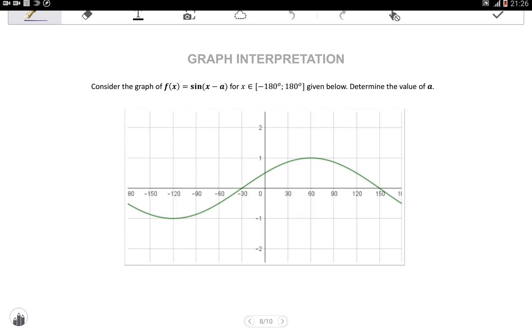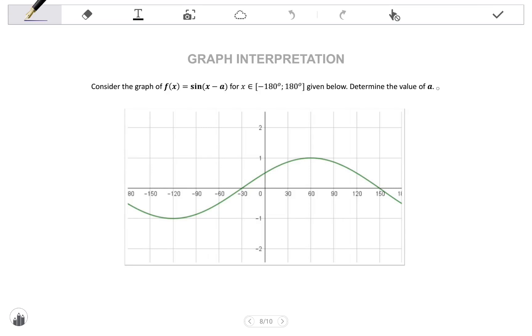Let's look at a few more examples of finding the trig equation of a graph. We're told consider the graph of f of x equals sine x minus a for x is an element of negative 180 degrees to 180 degrees given below. Determine the value of a.